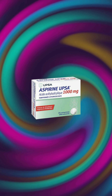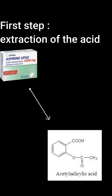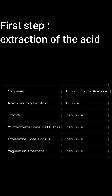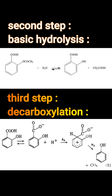Hello everyone. Today we will be making phenol, a useful organic reagent, from aspirin. The first step of the synthesis will be the extraction of our starting reagent, acetylsalicylic acid. For that we will need to look at a spreadsheet of the components of aspirin, then pick a solvent that can only dissolve our product. In the second step we will form salicylic acid by basic hydrolysis.